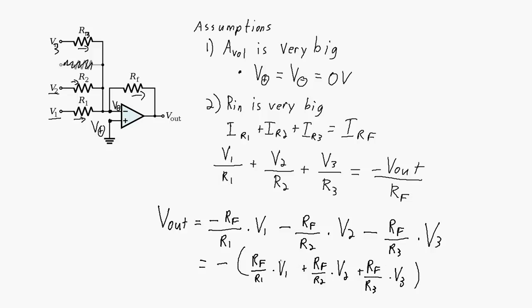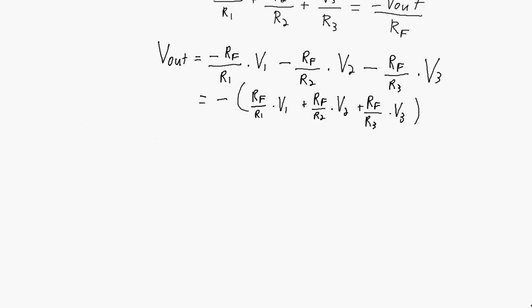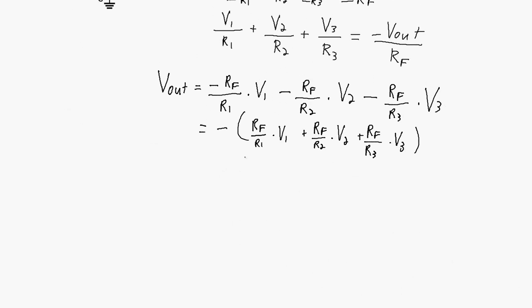So really our Vout, we can see, is proportional to the sum of V1 plus V2 plus V3. And in fact, if RF over R1 and R2 and R3 are all equal to each other, all four of these resistors are equal to each other, so this special case, we get Vout is equal to negative V1 plus V2 plus V3.